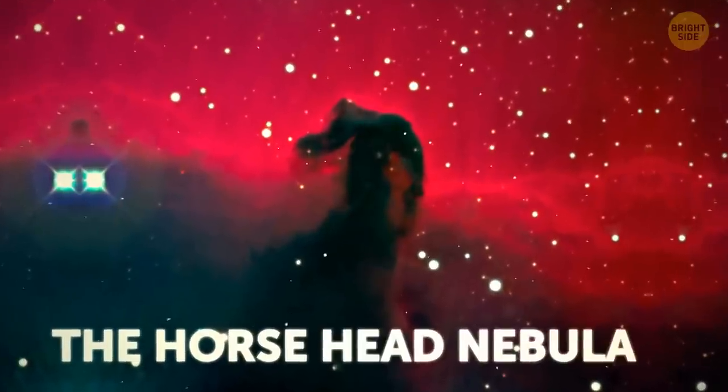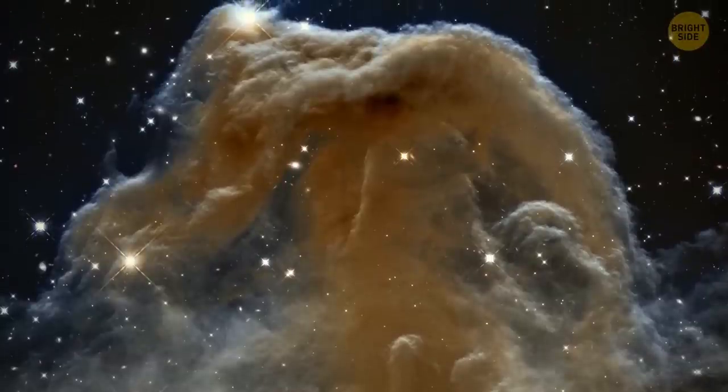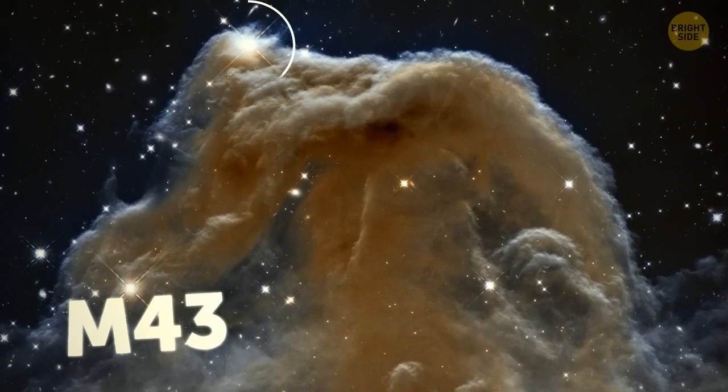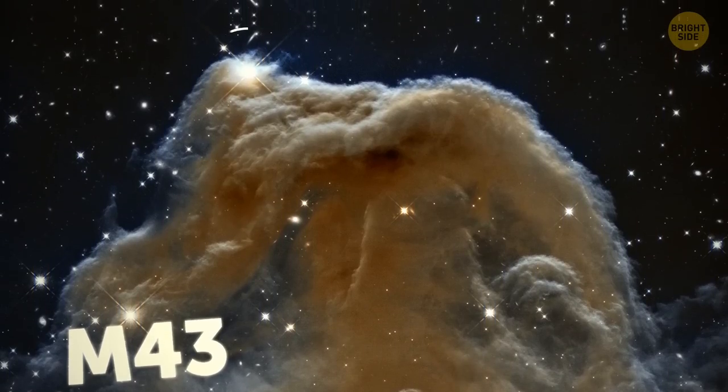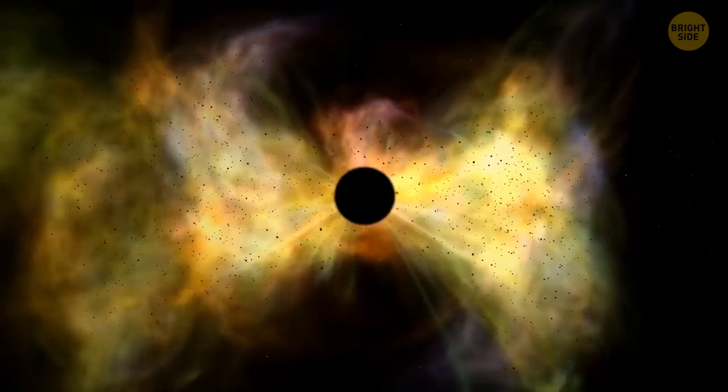The Horsehead Nebula. It's off to the port side. That's left for you landlubbers. Its designation is M43. The newborn star at the top of the horse's head has a strong solar wind that is deforming the shape of the nebular cloud.